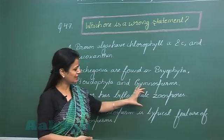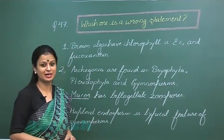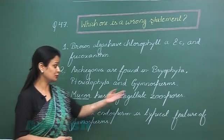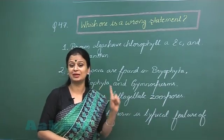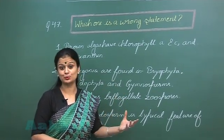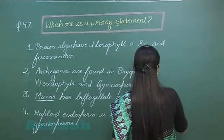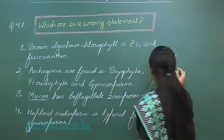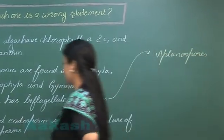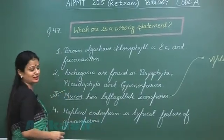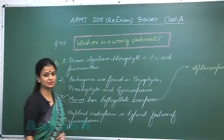Now, mucor has biflagellate zoospores. Mucor is a fungus which belongs to zygomycetes, and in zygomycetes zoospore formation is absent. In mucor there is formation of aplanospores — spores which are non-motile and are formed inside the sporangia. So instead of motile spores, mucor forms aplanospores. This would be the wrong statement. For question 47, the right option is option number 3.